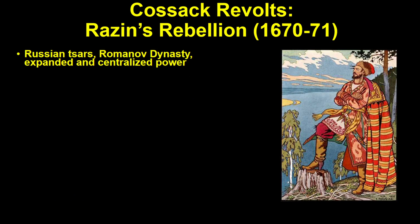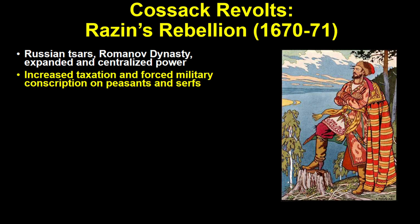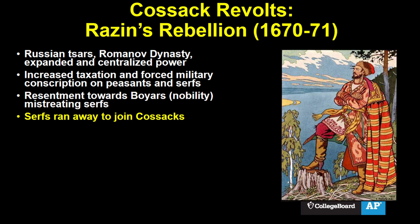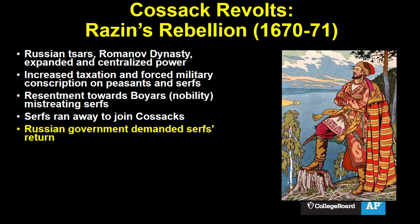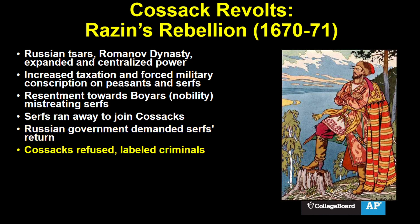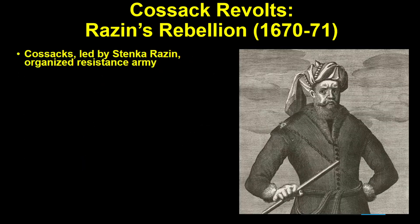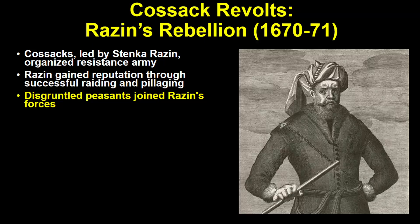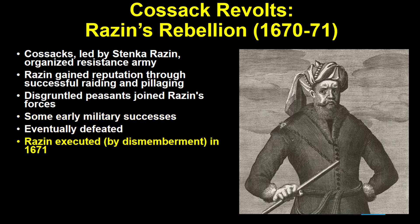By the 1660s, there was another major Cossack revolt, this time against the Russian Empire itself. The Romanov czars had been expanding and centralizing their power, including increases in taxation and forced military conscription on peasants and serfs. There was also resentment towards the boyars — the nobility — who often mistreated the serfs. Many serfs escaped and ran away to join the Cossacks. When the Russian government demanded the Cossacks return these serfs and the Cossacks refused, the government cut off their food supply. In response, the Cossacks organized a resistance army led by Stenka Razin, who built his reputation through raiding. Razin's army of Cossacks and disgruntled peasants had some early military successes, but were eventually defeated, and Razin was executed in 1671.